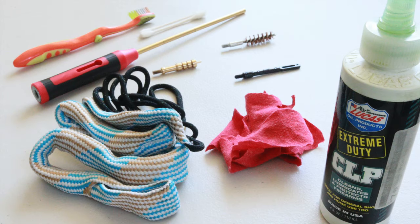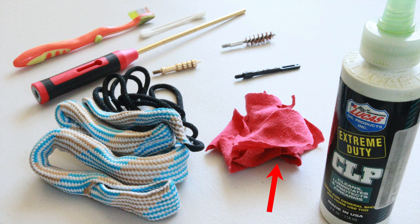To get started, you'll need a few things: CLP, cleaning patches, or in this case I'm going to use a cut-up t-shirt, a patch holder, a bronze or nylon bore brush, a cleaning jag, a cleaning rod with handle, cotton swabs, a nylon brush, and a bore snake.